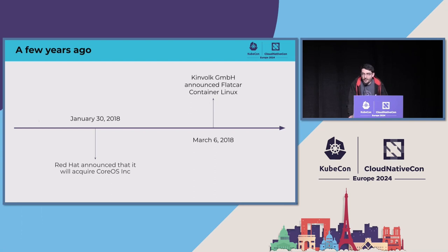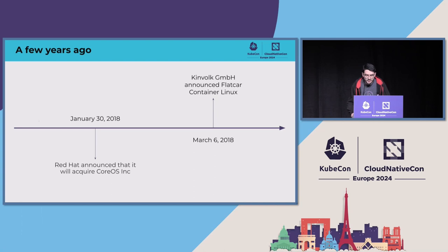Along the ride, two major events happened. In January 2018, Red Hat acquired Container Linux — the CoreOS company and the Container Linux projects. A few months later, the Kinvolk organization started the Flatcar Container Linux project. That's about the history of our two projects and why we're here talking about container-focused OSes.